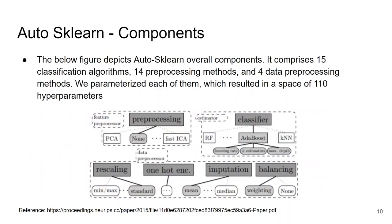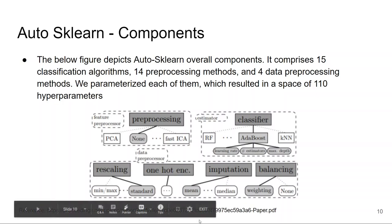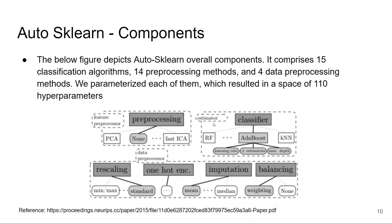Let's discuss the components of Auto-sklearn. Auto-sklearn comprises of 15 classification algorithms, 14 preprocessing methods, and 4 data preprocessing methods. The 4 data preprocessing methods are rescaling, one-hot encoding, imputation, and balancing. A few preprocessing methods are PCA and FastICA, and some of the classification algorithms are Random Forest, AdaBoost, and KNN. They parameterized each of them and it resulted in a space of 110 hyperparameters.